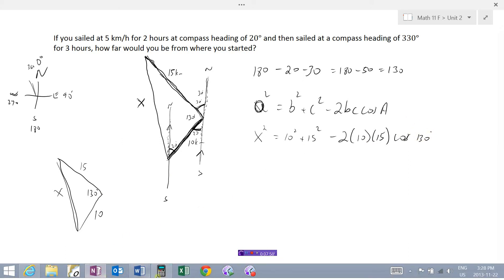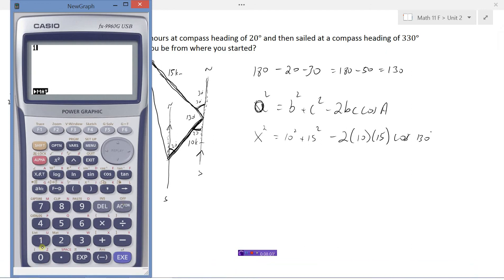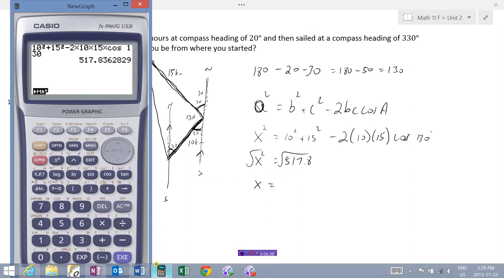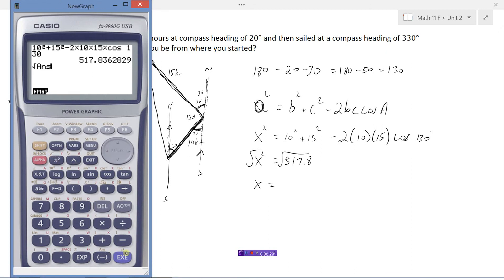And so I can go to the calculator. 10 squared plus 15 squared minus 2 times 10 times 15 times the cosine of the angle in between is 517.8. And to get x I will square root both sides.